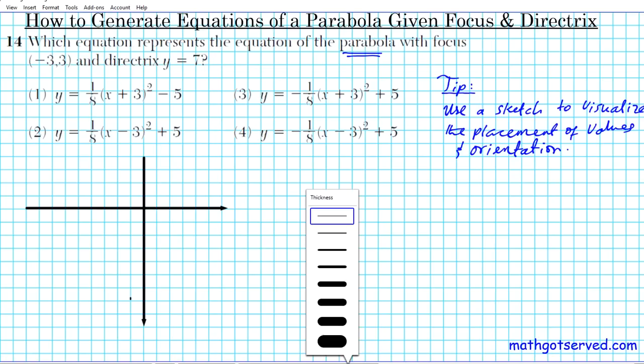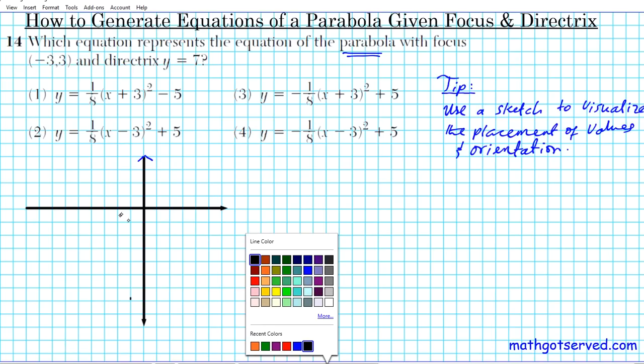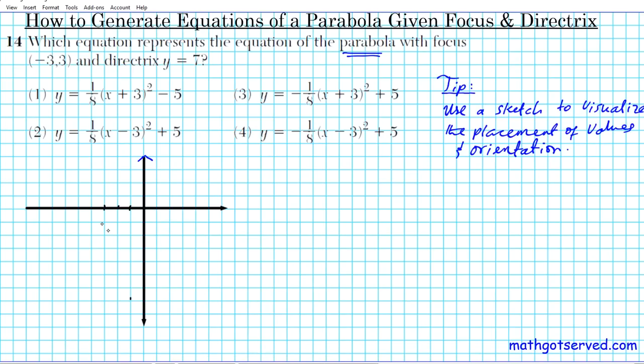Now let's sketch the focus first: (-3, 3). So one, two, three, and then go up one, two, three, right there. That's the focus of our parabola. And the directrix is located on the line y = -7. So it's down here. Three, four, five, six, seven—right there is the directrix.